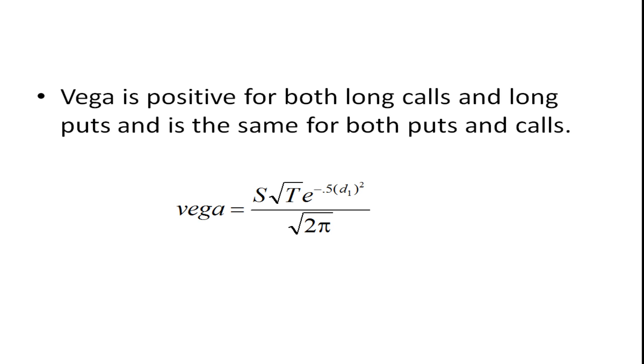Similarly with a put. You want the stock price to move a lot. Now when we own stock, we generally don't like volatility. But when we own options, we like it to move a lot because of that limited downside loss. All you're going to lose is the premium.